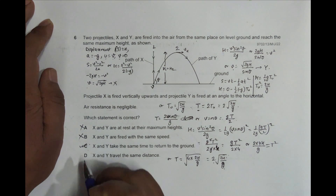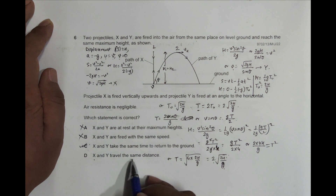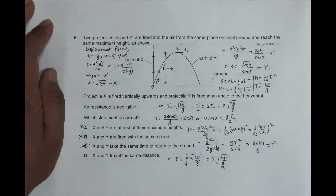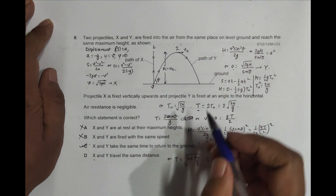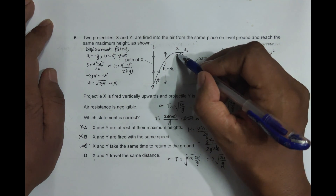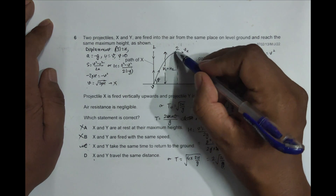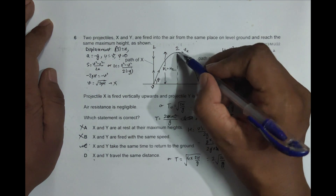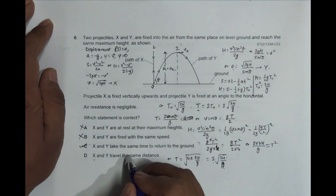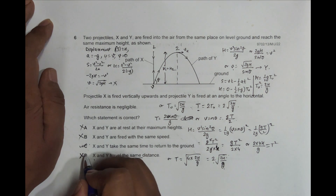Finally, statement D says X and Y travel the same distance. Projectile X travels straight up and down a total distance of 2H. Projectile Y follows a curved path, and the arc length of that path is definitely greater than 2H. So Y travels more distance than X — statement D is incorrect. Therefore the correct answer is choice C only.